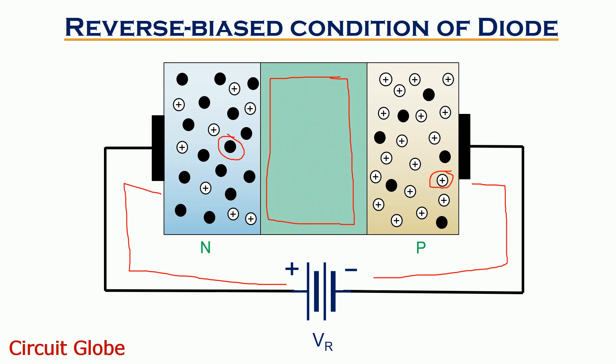This causes the potential barrier of the device to increase. In such a condition, no majority current flows. However, a small minority current flows through the device that is known as reverse saturation current.